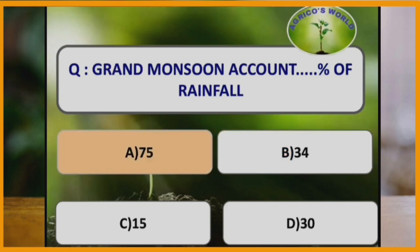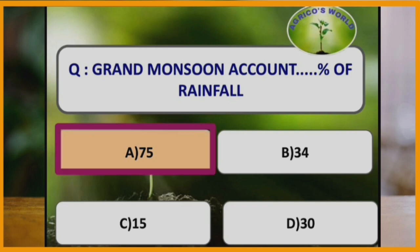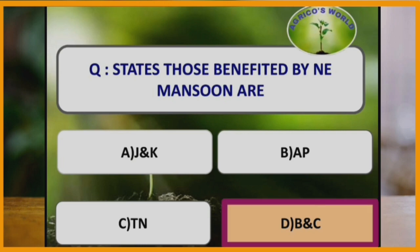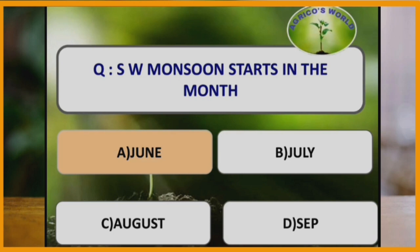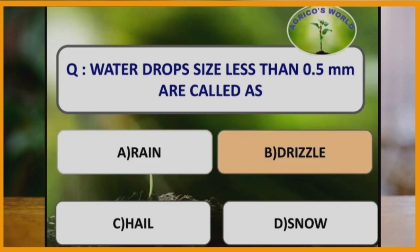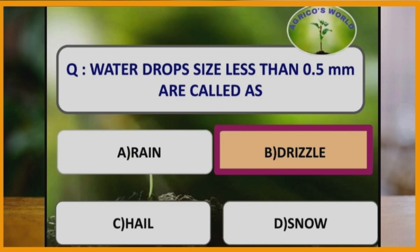Southwest monsoon is called grand monsoon because it accounts for 75 percent of rainfall, more than the northeast monsoon. The states benefited by northeast monsoon are Andhra Pradesh and Tamil Nadu. Southwest monsoon starts in the month of June. Water drops less than 0.5 mm are called drizzle, whereas greater than 0.5 mm is called rain.